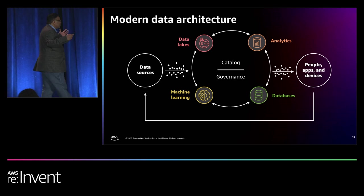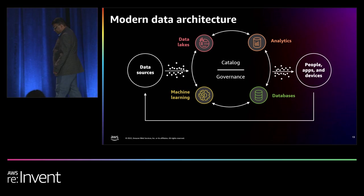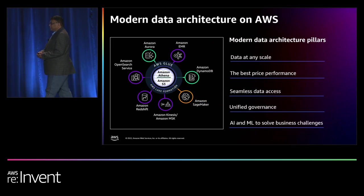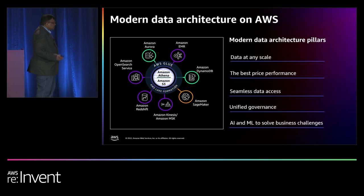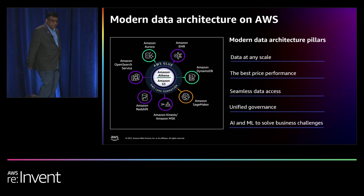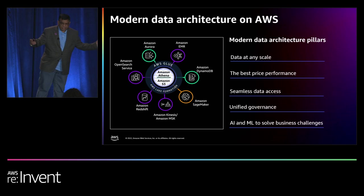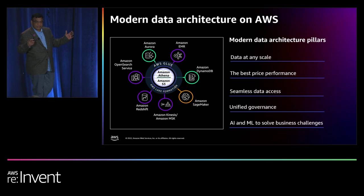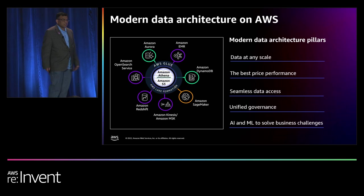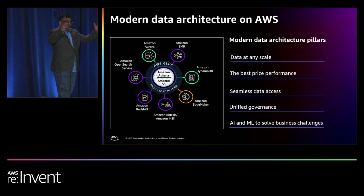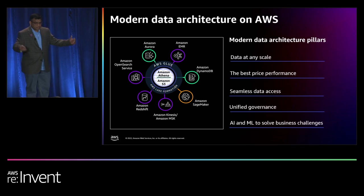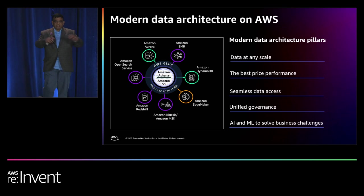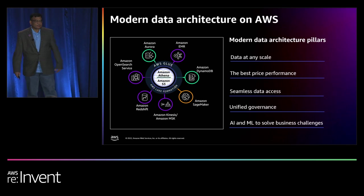AWS provides the most comprehensive tools for the end-to-end data journey. This is the modern data architecture on AWS. It has five pillars. Data at any scale: you can use Amazon S3 to build scalable data lakes, Amazon DynamoDB for NoSQL databases, Amazon Aurora for relational databases, and Amazon Redshift for data warehouses. Best price for performance: you can achieve best price for performance by using AWS purposeful data services. Seamless data access: you can move data seamlessly by using AWS Glue.